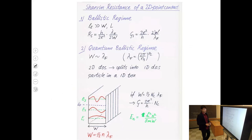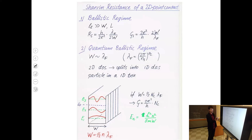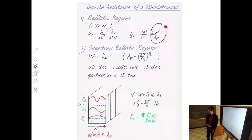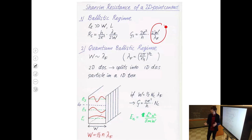We are in the ballistic regime and also in the quantum regime — low temperature, constriction of the size of the wavelength. In the ballistic but classical regime, conductance is proportional to a factor combining fundamental constants and the width of the constriction relative to the wavelength. So you can have any conductance you want as you continuously change the width — conductance increases and resistance decreases.